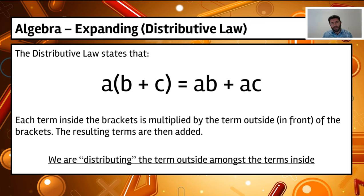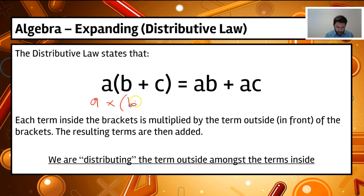First and foremost, let's have a look at what the distributive law is in regards to expanding. This is what the distributive law states: when we have a term outside the brackets — the term a — multiplied by any terms inside the brackets, say b plus c, when we multiply that out we get ab plus ac. We're distributing the term outside the brackets with each of the terms inside.